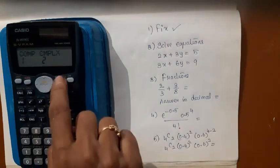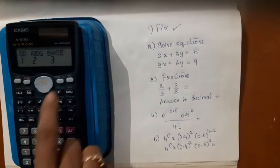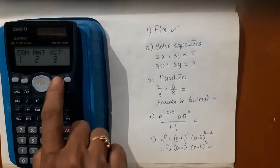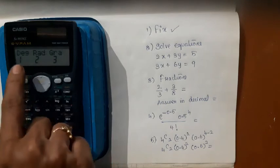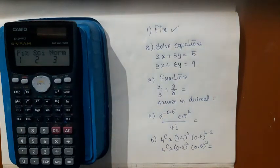Press it once again you get standard deviation, regression, and base right on the screen. Press it again you get equation, matrices, and vector, then again degree, radian, gradient. Here you get fix, scientific, and normal.